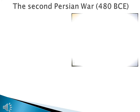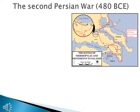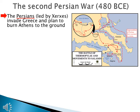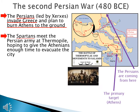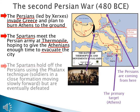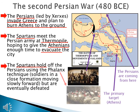Let's look at the Second Persian War, which happens in 480 BCE. The Persians, now led by Xerxes I — who looks nothing like he does in the movies — invade Greece and plan to burn Athens to the ground. Athens is the primary target. The Spartans meet the Persian army at Thermopylae Pass, trying to give the Athenians enough time to evacuate the city. The Spartans hold off the Persians using the phalanx, a technique where soldiers in a close formation move slowly forward. But the Spartans are eventually defeated and they all die in the Thermopylae Pass — that's the 300.